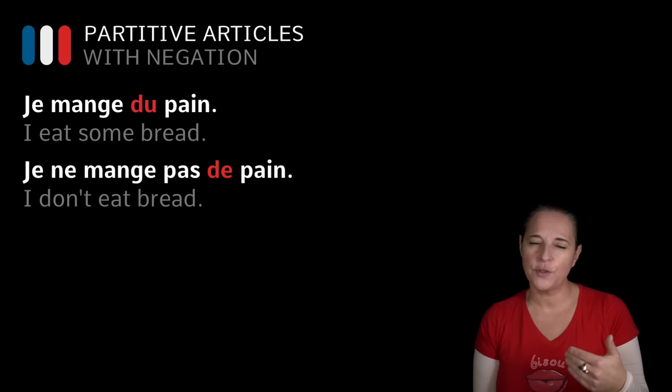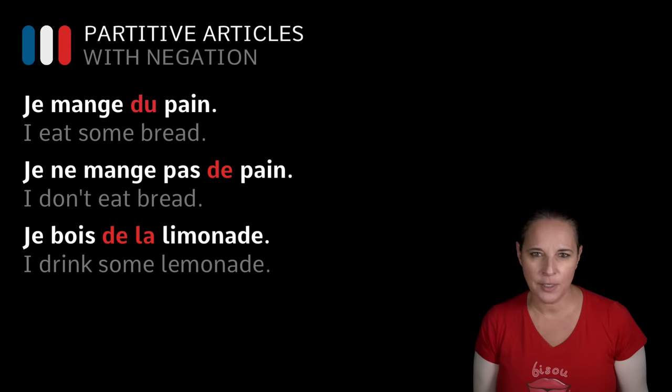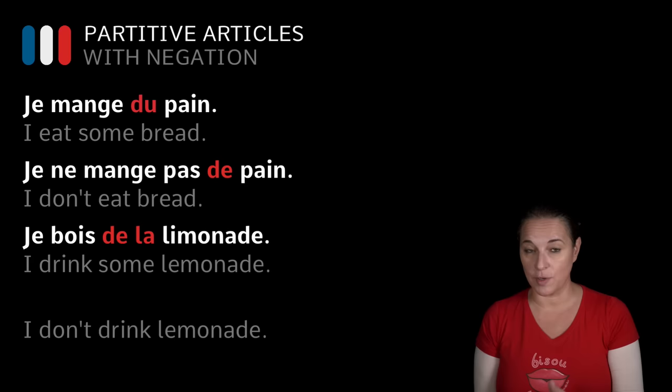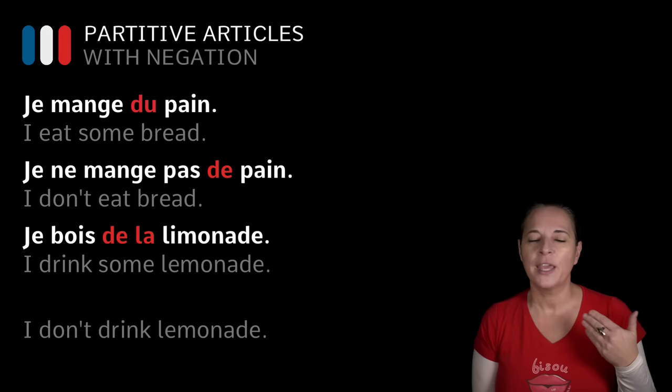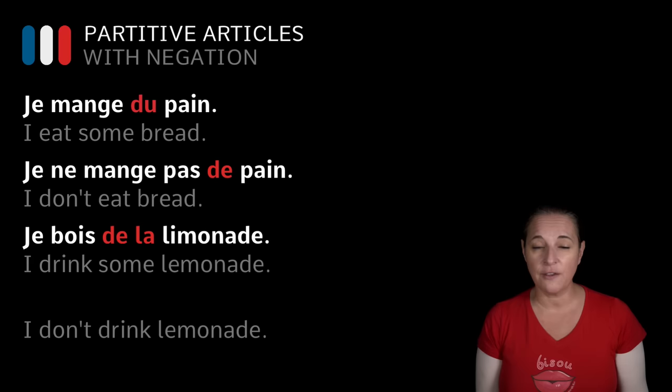'Je bois de la limonade' — I drink some lemonade. But what happens if we want to say I don't drink lemonade? In English you don't necessarily say 'I don't drink some lemonade' — you can omit it. In French, you've got to have this partitive article, and you've got to think: I am using a negation, so no matter what, the partitive article will be DE. 'Je ne bois pas DE limonade.'